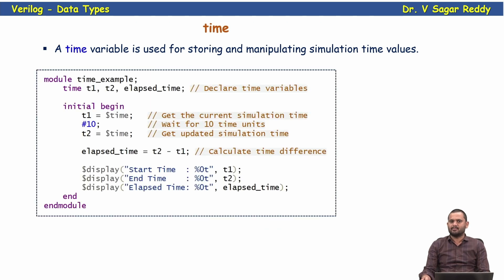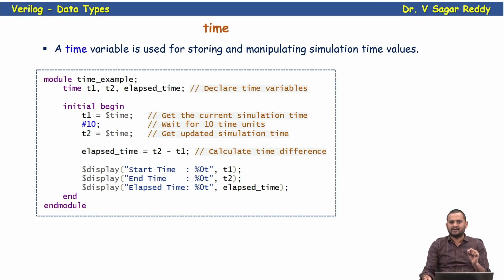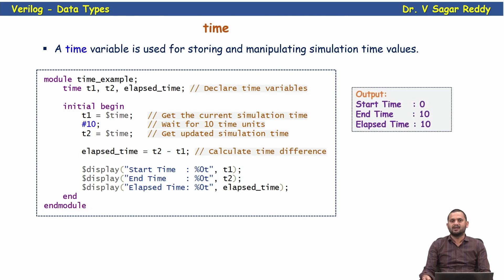A time variable is used to store and manipulate simulation time values. For example: time t1, t2, elapsed_time; initial begin t1 = $time; #10; t2 = $time; elapsed_time = t2 - t1; end. Here t1 holds 0 (start time), t2 holds 10 (after 10-unit delay), and elapsed_time = 10 - 0 = 10. The display shows: start time = 0, end time = 10, elapsed time = 10.